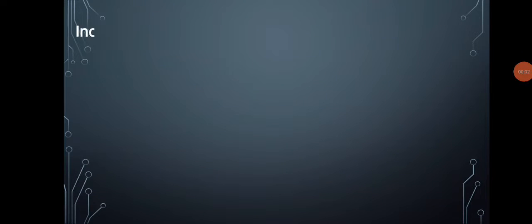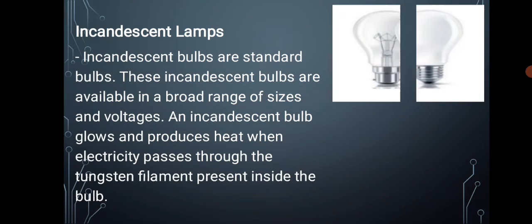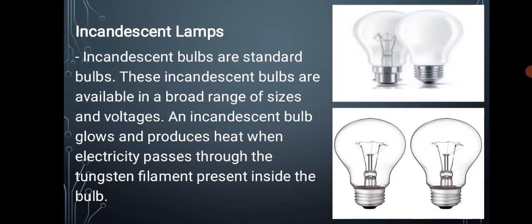Let's discuss the first one. Number one: incandescent lamps. Incandescent bulbs are standard bulbs. These incandescent bulbs are available in a broad range of sizes and voltages. An incandescent bulb glows and produces heat when electricity passes through the tungsten filament present inside the bulb. Many people are quite familiar with these bulbs. These bulbs are being gradually replaced by LEDs, fluorescent lamps, and other service-based new technologies.